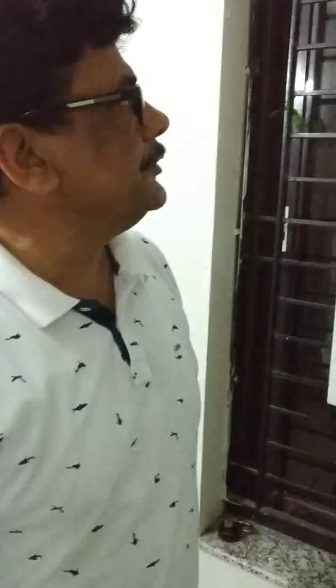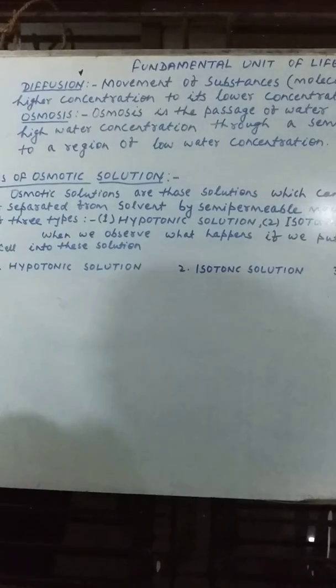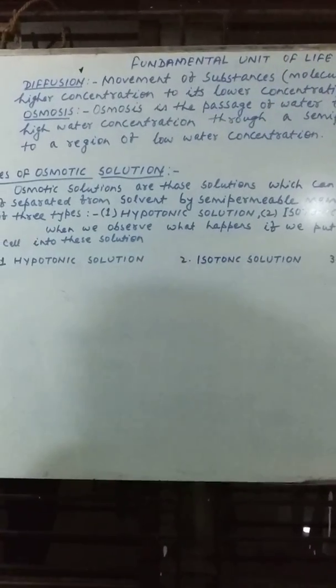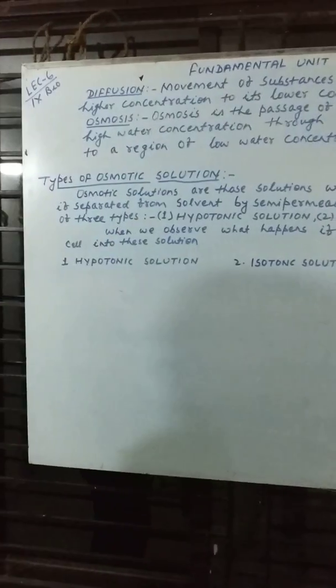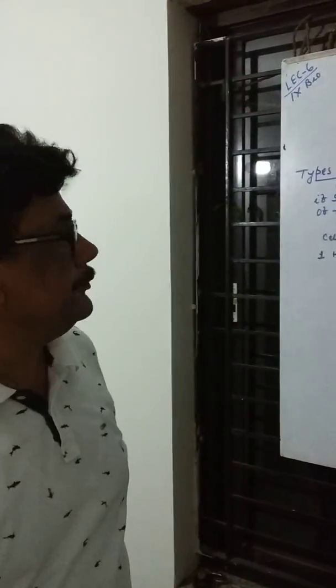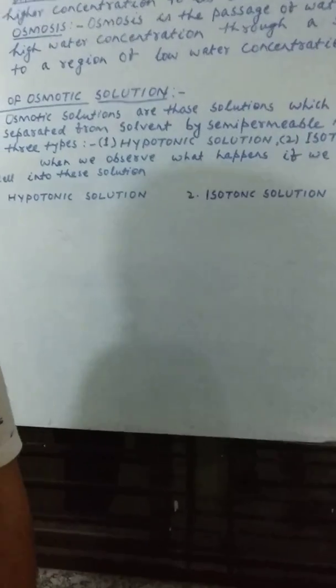Hello, class 9 students. Today, in continuation of the fundamental unit of life, we are going to start the next topic to be discussed. We have talked about diffusion in video number 5. Today, we will make it clear — the difference between diffusion and osmosis.